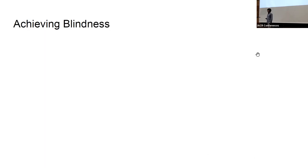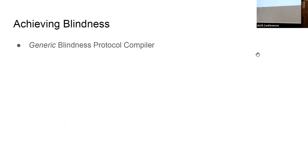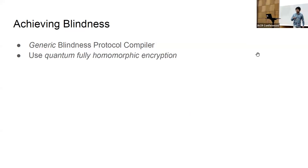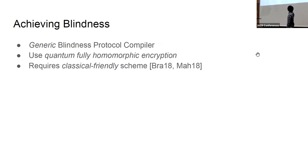For blindness, we construct a generic blindness protocol compiler. We can apply our compiler to the protocol from the previous slide, and also to any of the earlier works in the same line of literature, making them blind. The high-level idea is to run the protocol under FHE — fully homomorphic encryption — using schemes by Brakerski or Mahadev. There are some technical issues to work out to make the scheme compatible with the setting, but I refer to our paper for details.